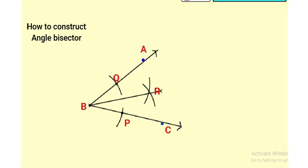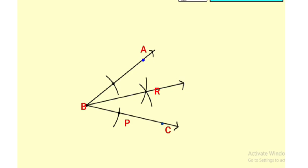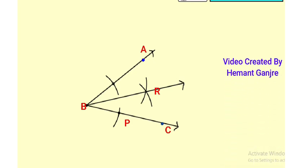Now draw ray BR. Ray BR is the angle bisector of angle ABC, and ray BR divides angle ABC into two equal or congruent angles.